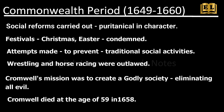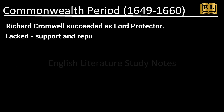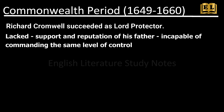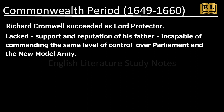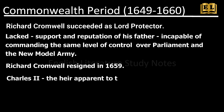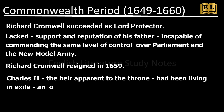Cromwell died at the age of 59 in 1658. His son Richard Cromwell succeeded as Lord Protector, but he lacked the support and reputation of his father and was incapable of commanding the same level of control over Parliament and the New Model Army. Losing control over the country, Richard Cromwell resigned in May 1659, leaving the Commonwealth with no clear leadership. This provided Charles II, the heir apparent to the throne who had been living in exile, an opportunity to return. The monarchy was restored in 1660.